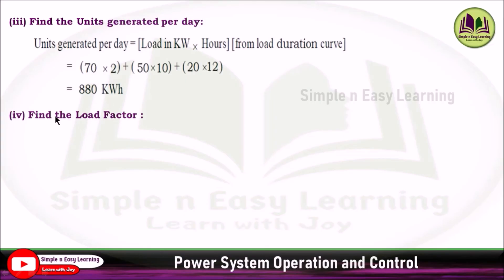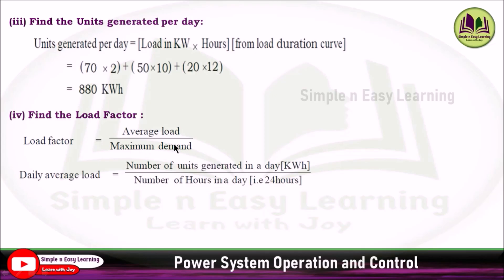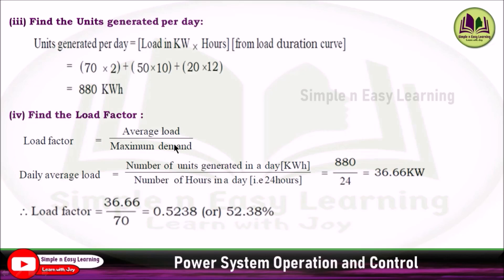Find the load factor. Load factor equals average load divided by maximum demand. Average load is the number of units generated in a day divided by 24 hours — that is 880 kilowatt divided by 24, which gives 36.66 kilowatt. Maximum demand is 70 kilowatt. Dividing gives 0.5238, or 52.38%. That is the load factor.